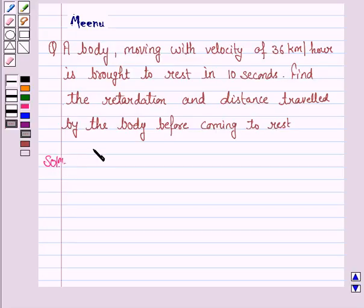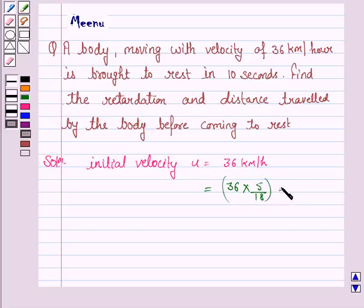We are given that the initial velocity u equals 36 km/h. We will convert this velocity to meters per second by multiplying by 5/18. This comes out to be equal to 10 m/s.